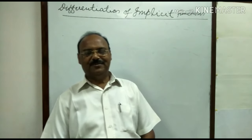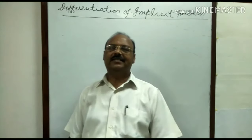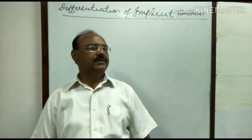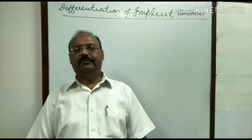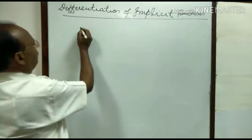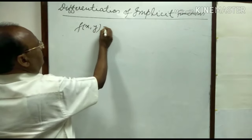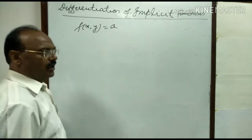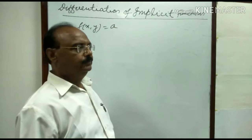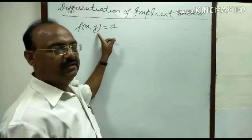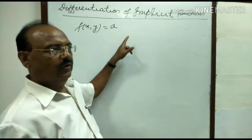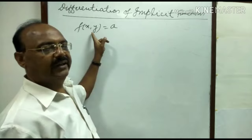Dear students, welcome to this video. Here we will be discussing differentiation of implicit functions. So first of all let us see what is an implicit function. A function of xy is equal to 8. It is said to be an implicit function if y cannot be expressed directly in terms of x.